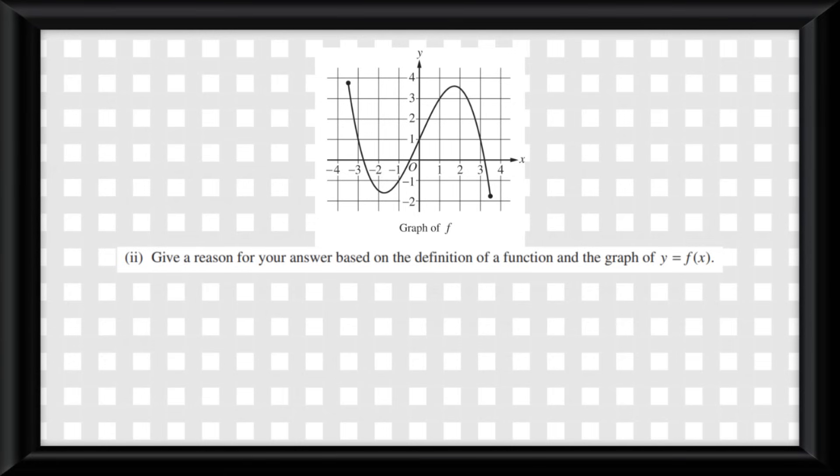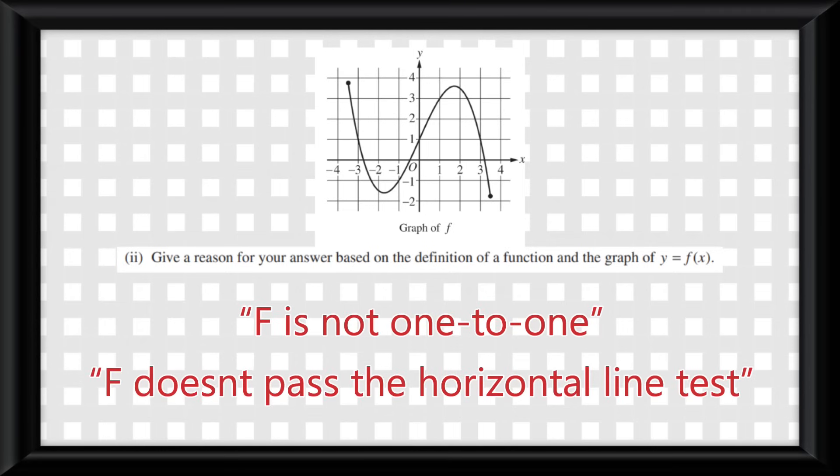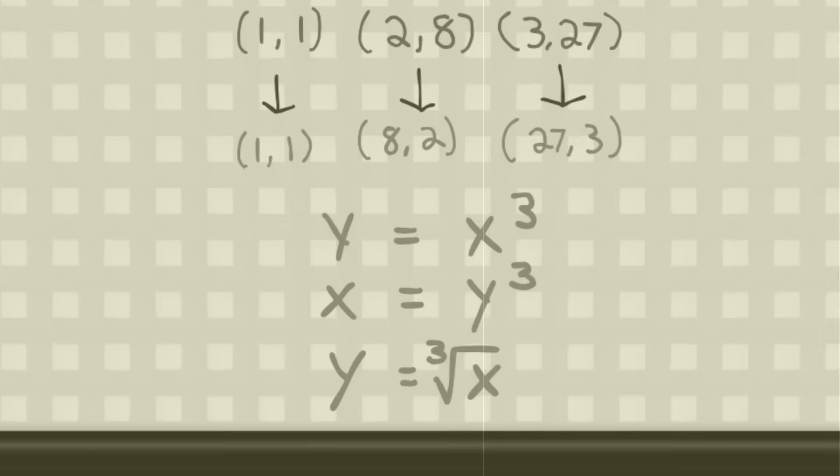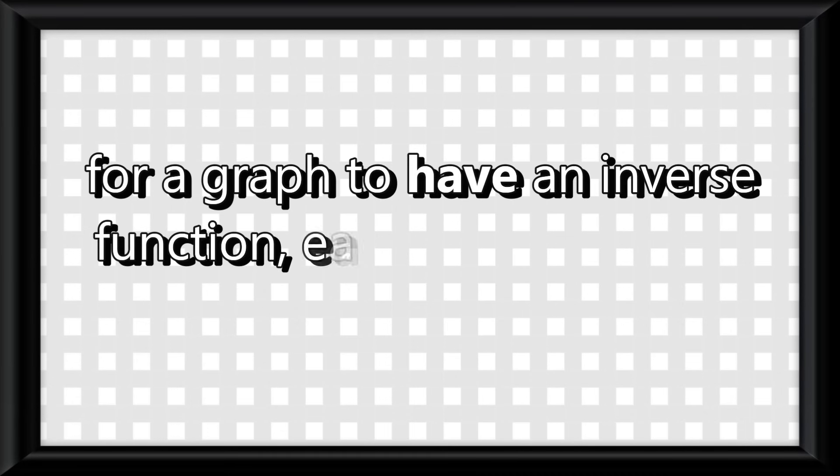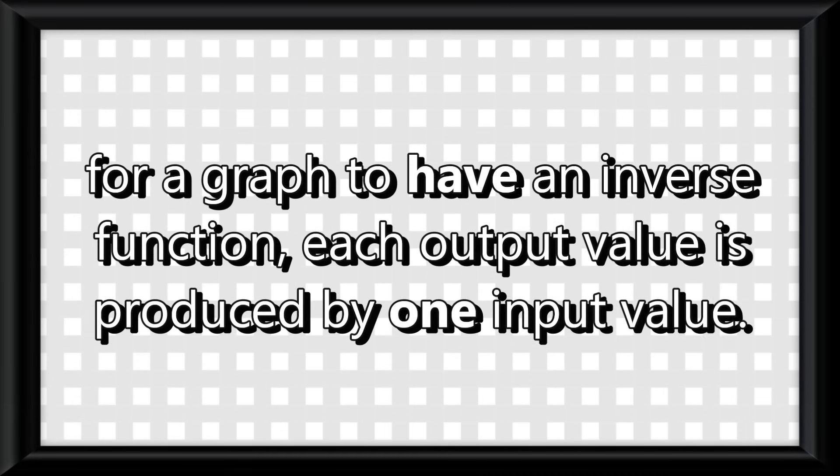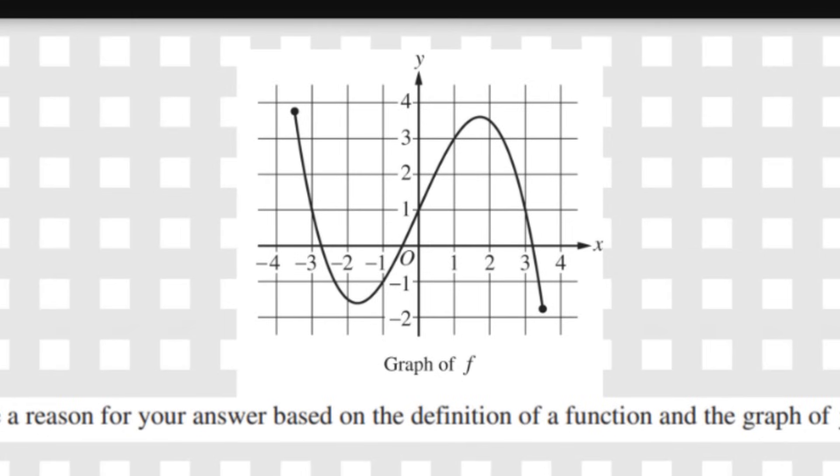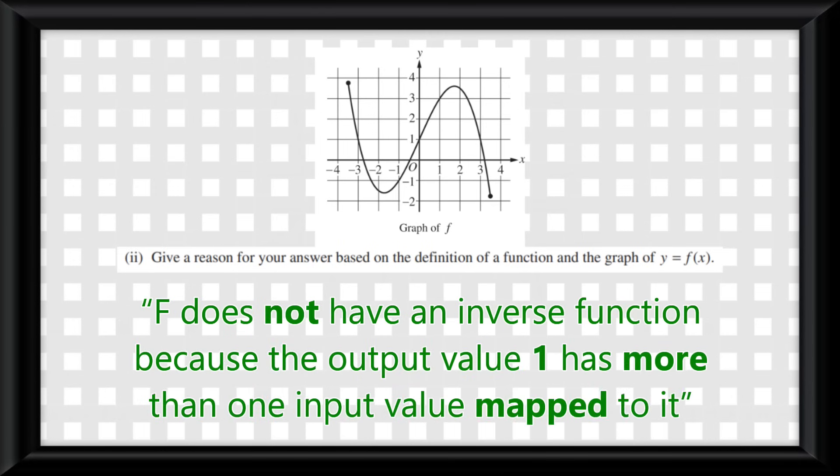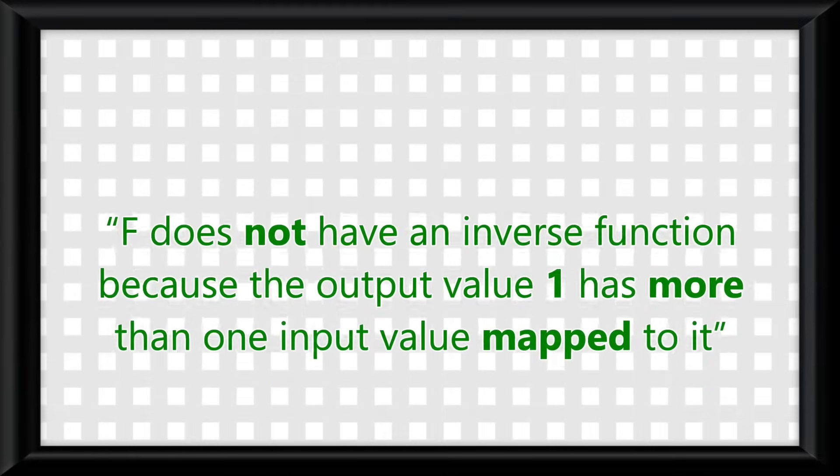Let me give you some quick answers that you do not give here. Do not say something like f is not 1 to 1. Or f does not pass the horizontal line test. Because if you choose these answers, it will not give you a point for this question. Remember what I said in my topic 2.8 video. For a graph to have an inverse function, each output value is produced by exactly one input value. We see here that the output value of 1 does not produce one input, and rather produces 3 inputs at negative 3, 0, and 3. So for our explanation, we could put something like, f does not have an inverse function because the output value 1 has more than one input value mapped to it. And this explanation will give us full points.